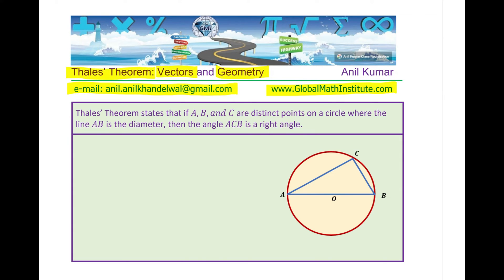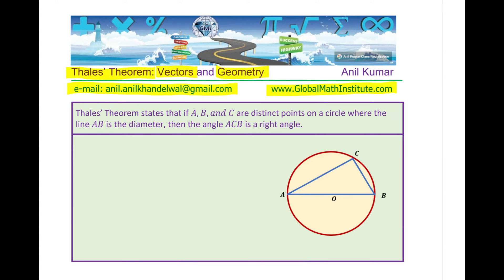What is Thales' Theorem? Thales' Theorem states that if A, B, and C are distinct points on a circle where the line AB is the diameter, then the angle ACB is a right angle. It is a known fact for many people, but proving it is kind of difficult. Here we have a circle with center O, and three points A, B, and C. AB is the diameter and C is another point on the semicircle. We have to show that this particular angle is 90 degrees.